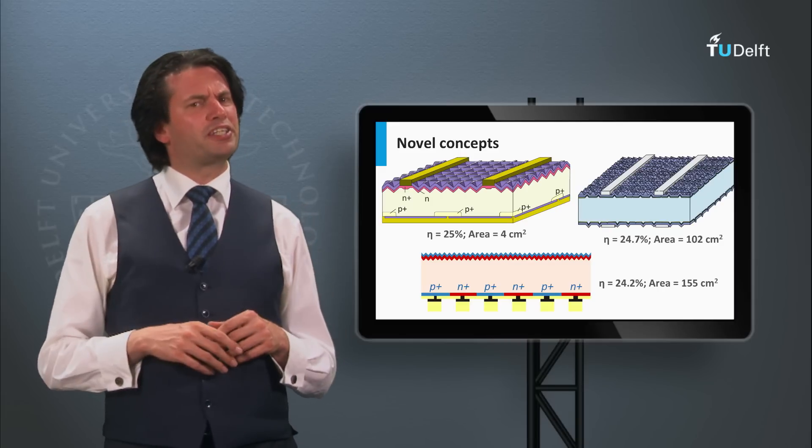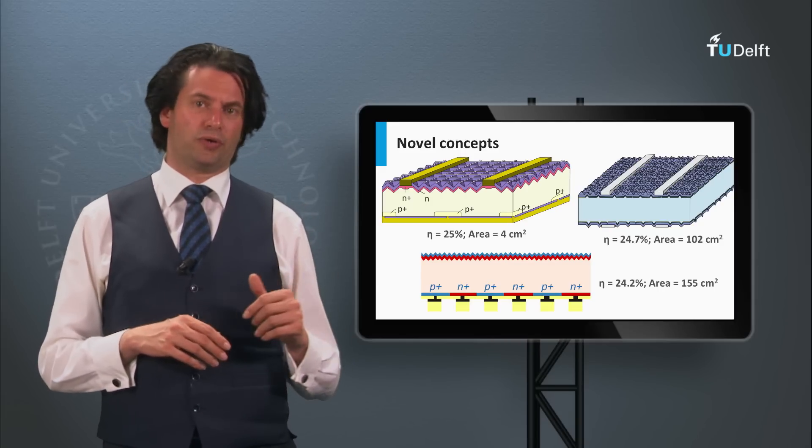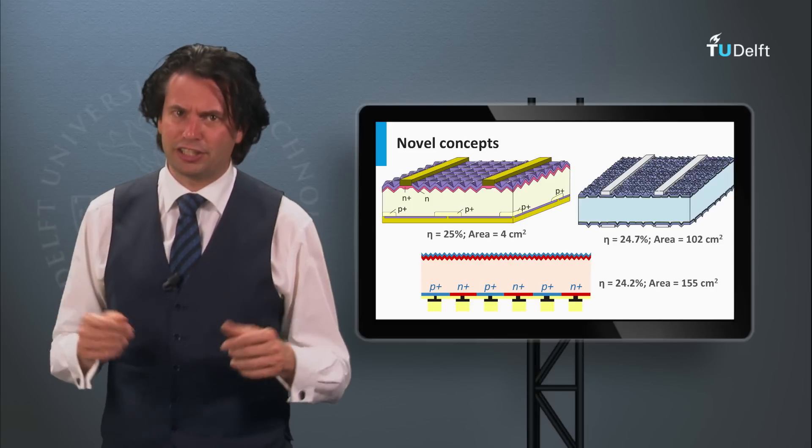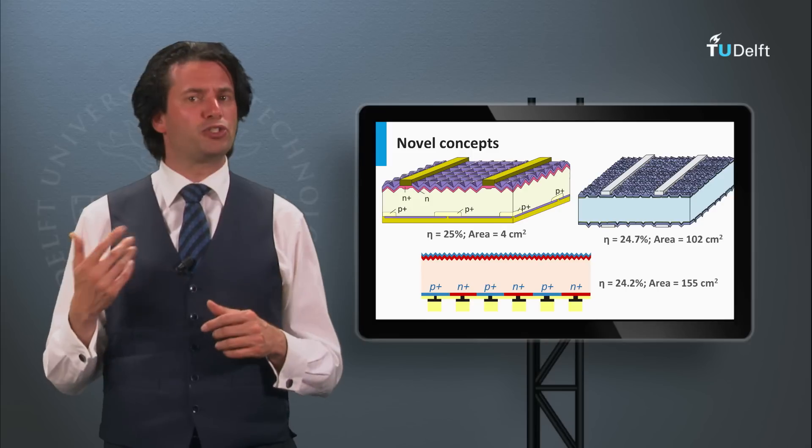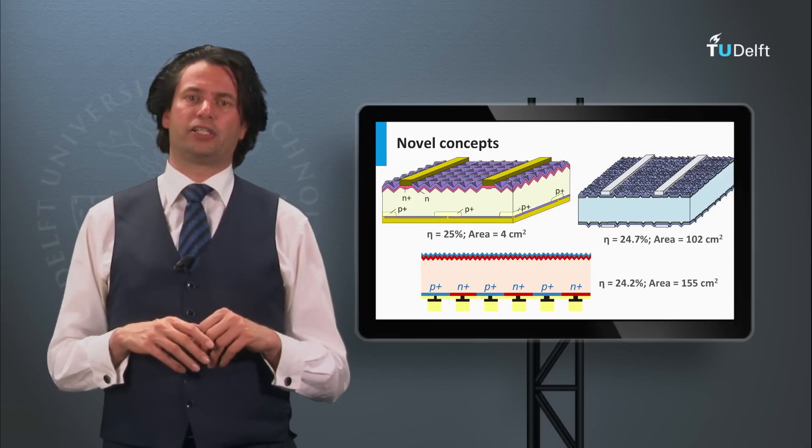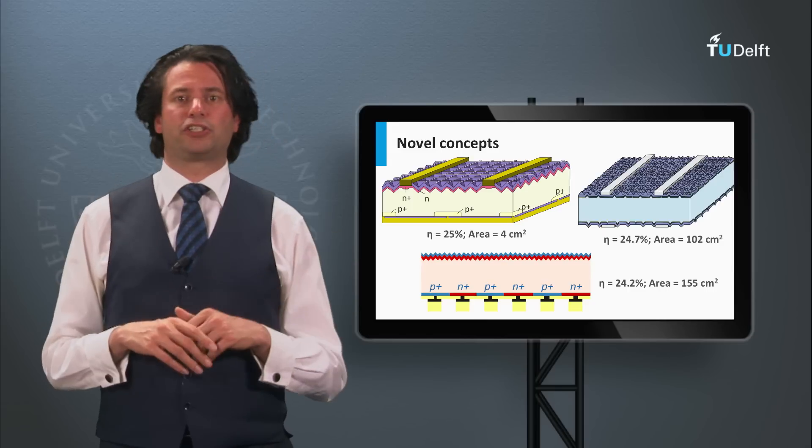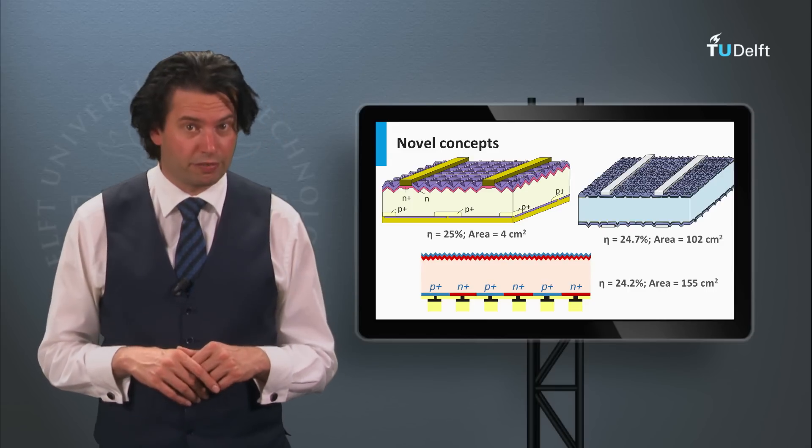The efficiency for multi-crystalline silicon solar cells are lower as the wafer quality is lower. The best efficiency achieved is 19.5% by Q-cells on a wafer with a size of 243 square centimeters. This is about 5 percent absolute below the record efficiencies based on monocrystalline silicon wafers.